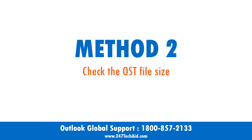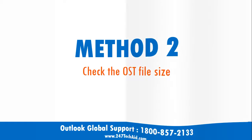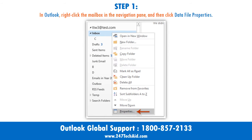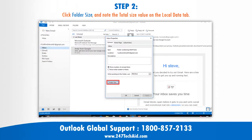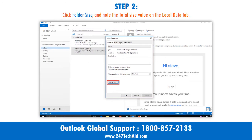Method 2: Check the OST file size. Step 1: In Outlook, right-click the mailbox in the navigation pane, and then click Data File Properties. Step 2: Click Folder Size, and note the total size value on the Local Data tab.